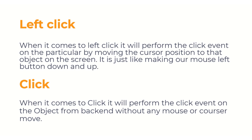What is Click? The Click activity performs the click event on the object from the backend, without any mouse or cursor movement. It will not scroll your window or move your mouse — it clicks on the object from the backend. Compared to Left Click, the Click event is faster. But depending on the scenario, you need to choose which activity is best.